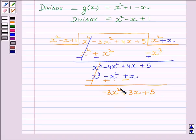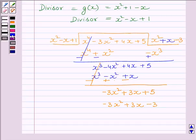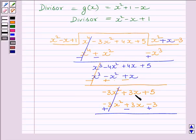To get minus 3x² we will multiply the divisor by minus 3, so we get minus 3x² plus 3x minus 3. We will subtract the like terms: minus 3x² plus 3x² is equal to 0; plus 3x minus 3x is again 0; plus 5 plus 3 is equal to 8. So we get remainder is equal to 8.